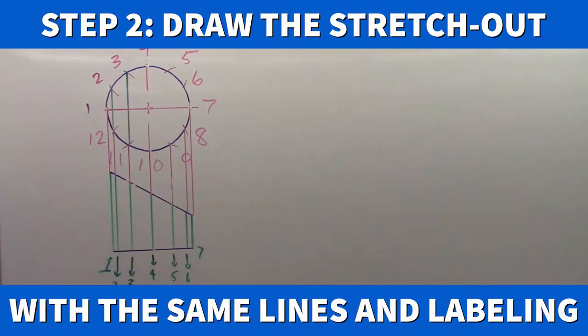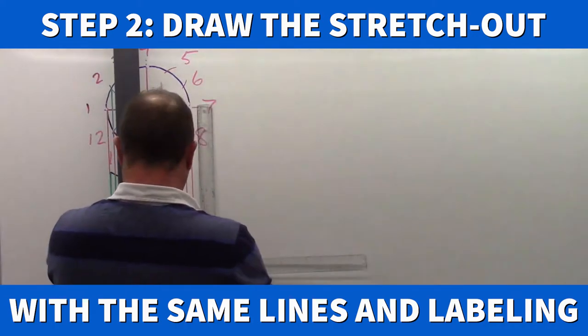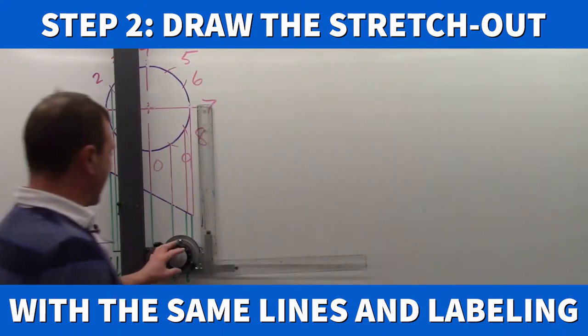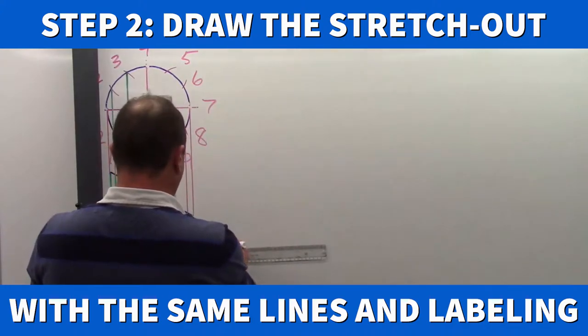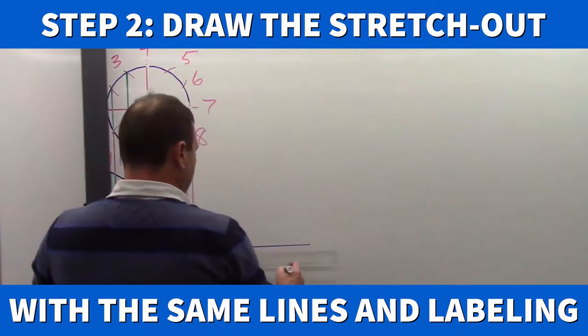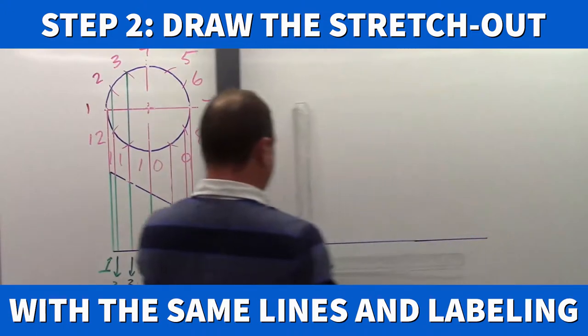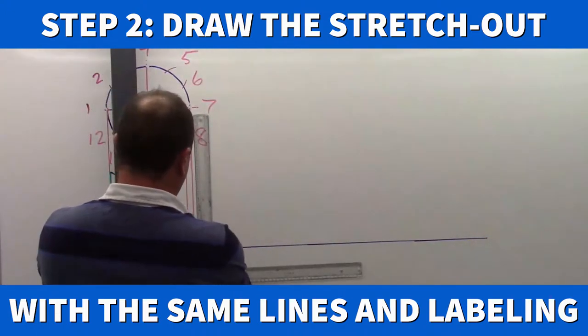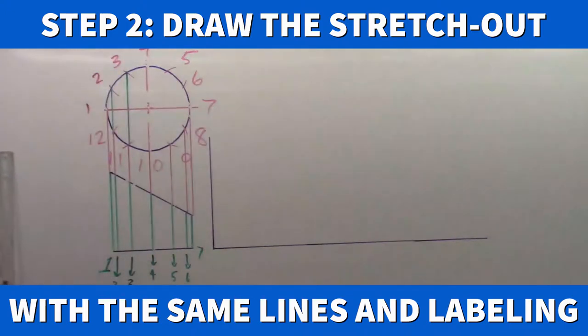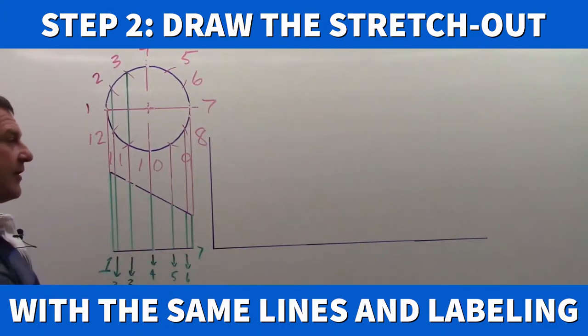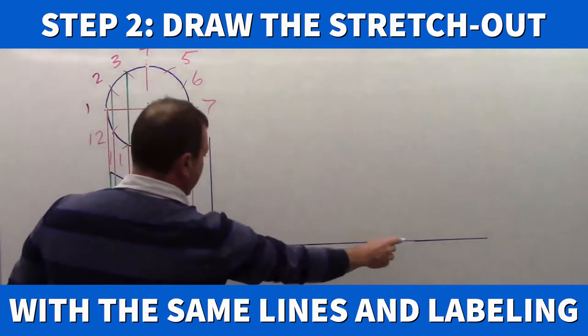Our next step once we have everything drawn is to establish our stretch out. Our stretch out really is the piece of metal that it's going to take to make the part. This is where we actually establish our pattern. I'm going to project my baseline and run that just long for now. And I'm going to run a vertical long as well. So I end up with an XY axis or starting point. We refer to this corner as a datum point, a common reference point. So everything is measured off that one point.